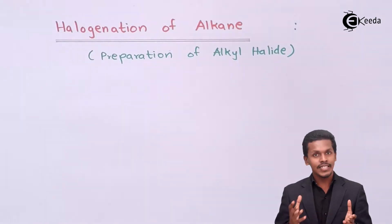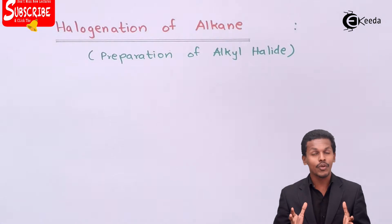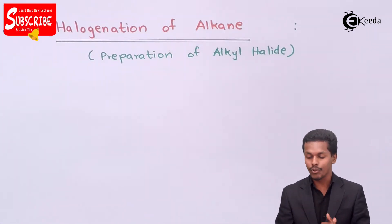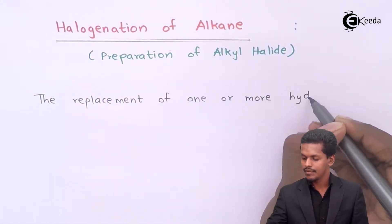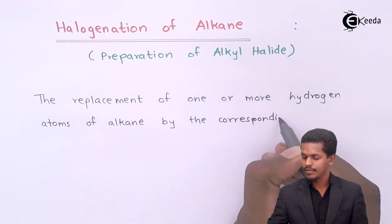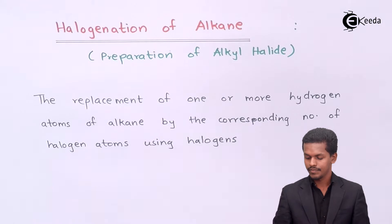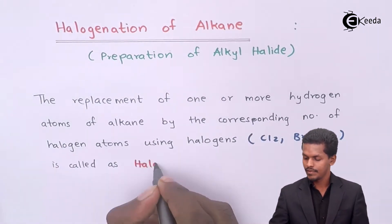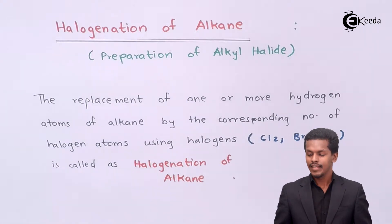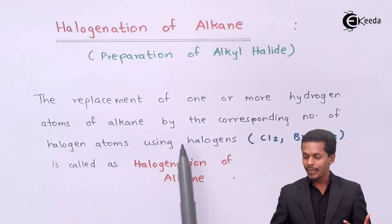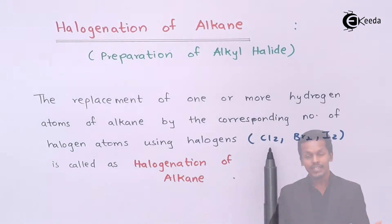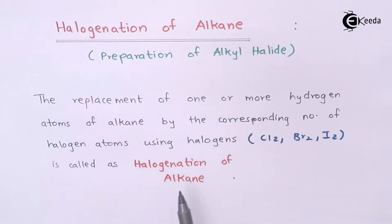Talking about the halogenation of alkyl halides — this is basically the first preparation method we are going to discuss, and there are various other lectures to follow. So what is halogenation? Halogenation means the replacement of one or more hydrogen atoms of an alkane by the corresponding number of halogen atoms, using halogens such as Cl2, Br2, or I2. This is called the halogenation of alkane — a replacement reaction.